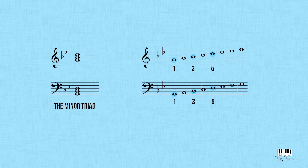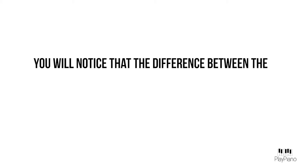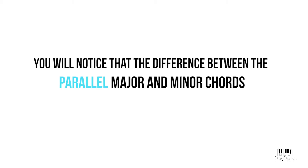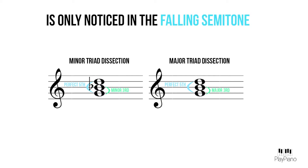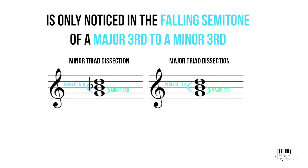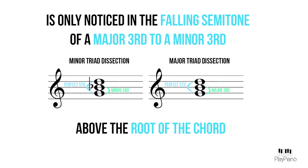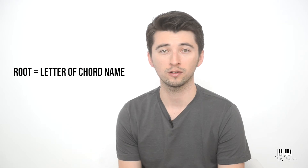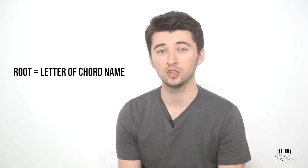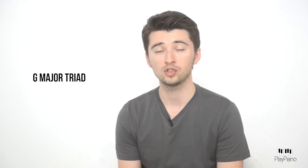The next triad is the second most common: the minor triad. It is composed of the first, third, and fifth scale degrees of whatever minor scale the base note is a part of. You will notice that the difference between parallel major and minor chords — which are major and minor chords with the same letter name — is only a semitone, from major third to minor third above the root. The root of the chord is whatever the chord is called. If I ask you to play a G major chord, then G would be the root.